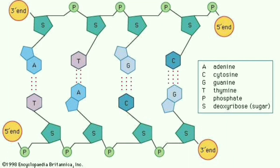DNA is made up of two strands helically bound to each other. The two strands are anti-parallel: if one strand runs from 5' to 3', the other runs from 3' to 5'. DNA has three components — a phosphate group, a sugar molecule, and bases (adenine, thymine, guanine, and cytosine). Adenine always pairs with thymine, and the bases pair together by hydrogen bonds, shown as dotted lines.